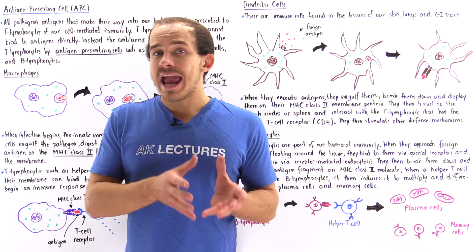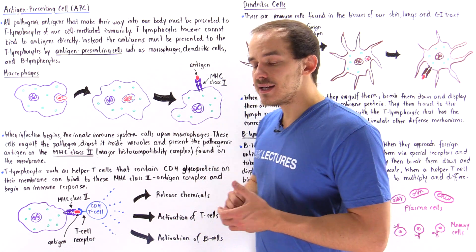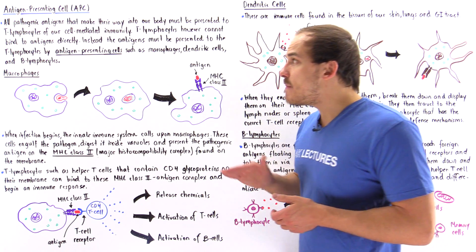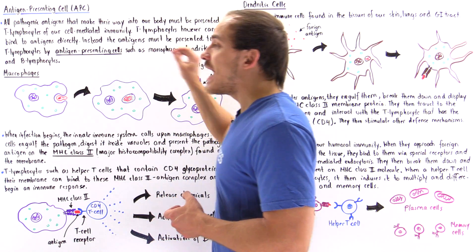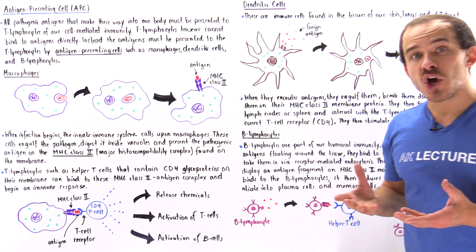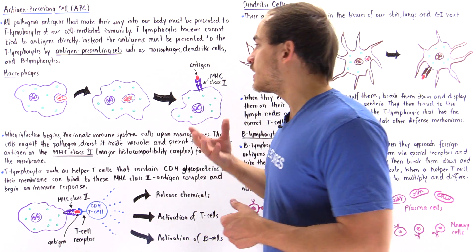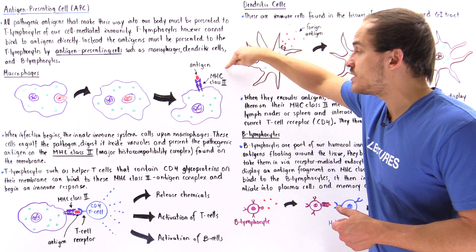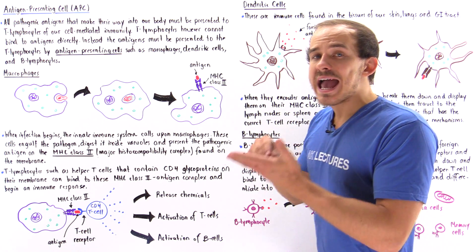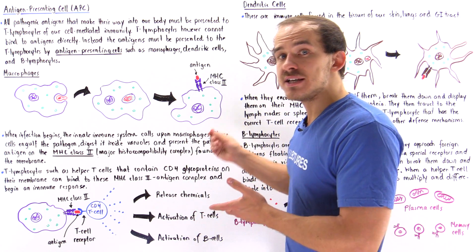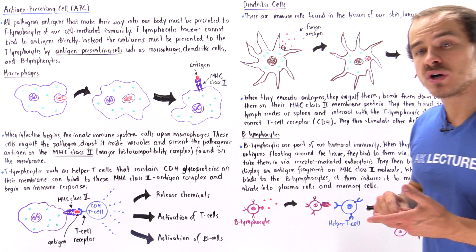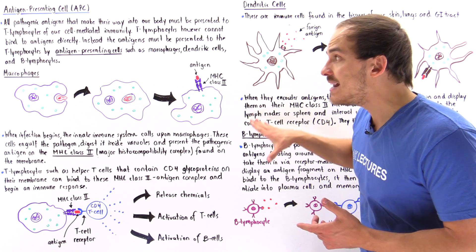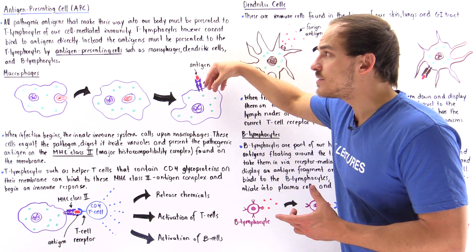Once the antigen-presenting cell engulfs the antigen, it takes that antigen and places it onto a special protein complex found on the membrane of the antigen-presenting cell. This protein complex is known as the major histocompatibility complex class 2, or simply MHC class 2. Only when the antigen is bound to this MHC class 2 complex can the lymphocyte actually see and interact with the antigen and bind onto it.